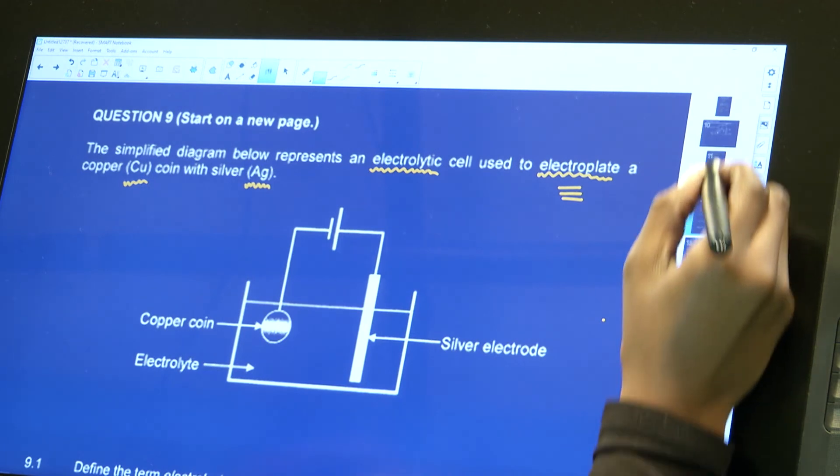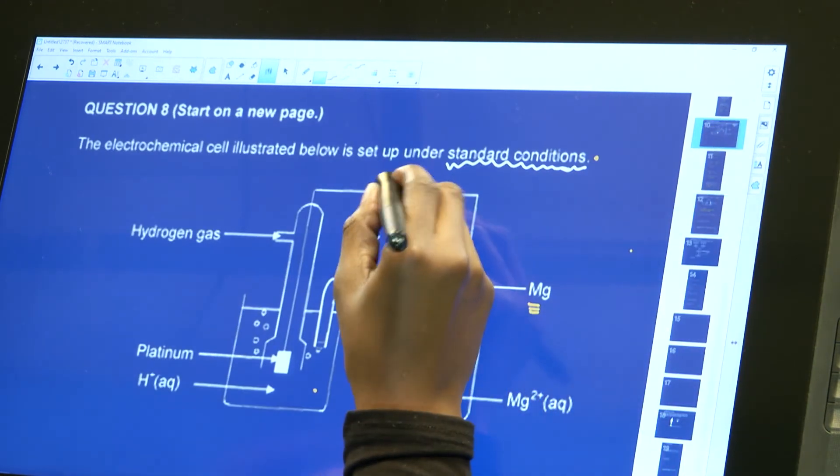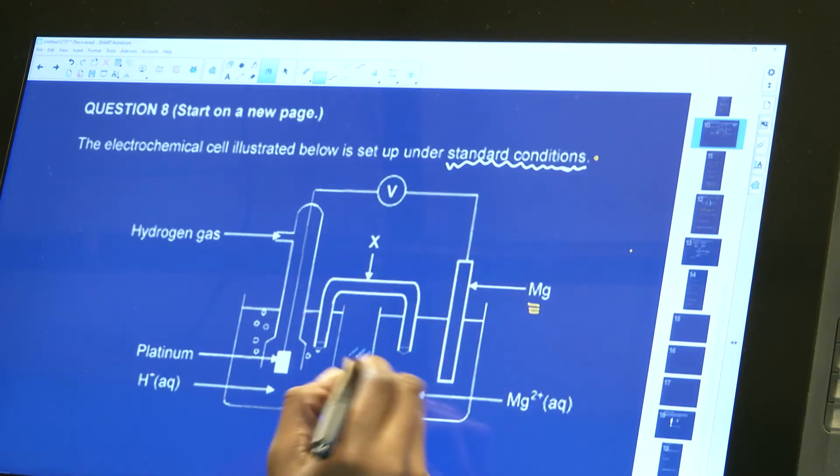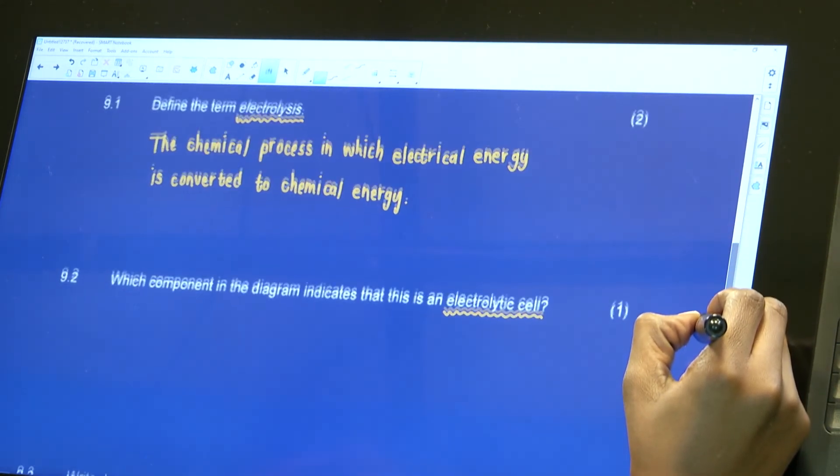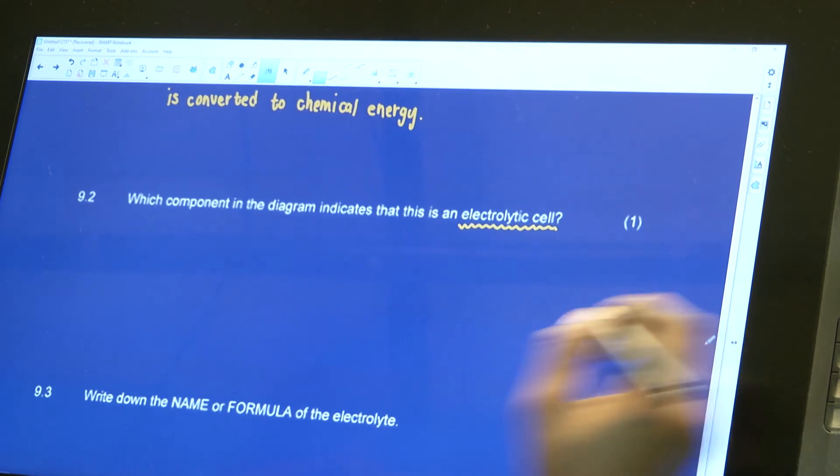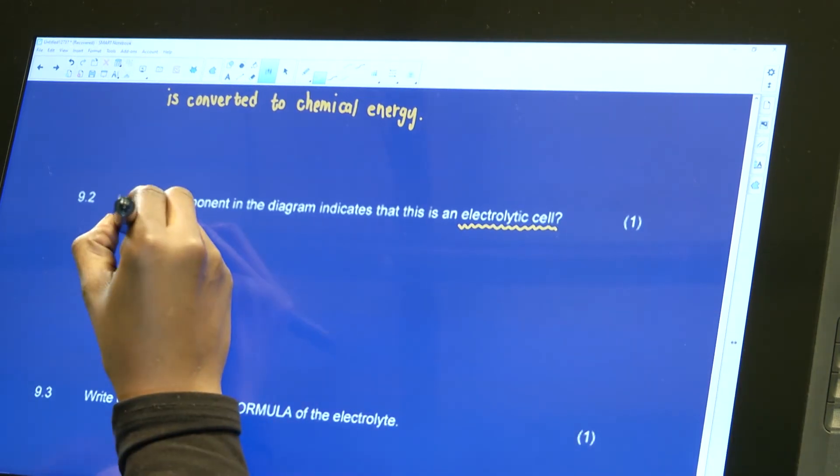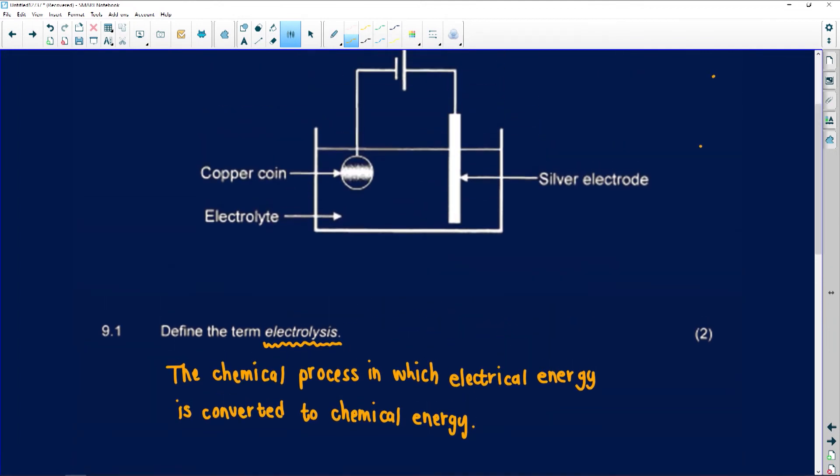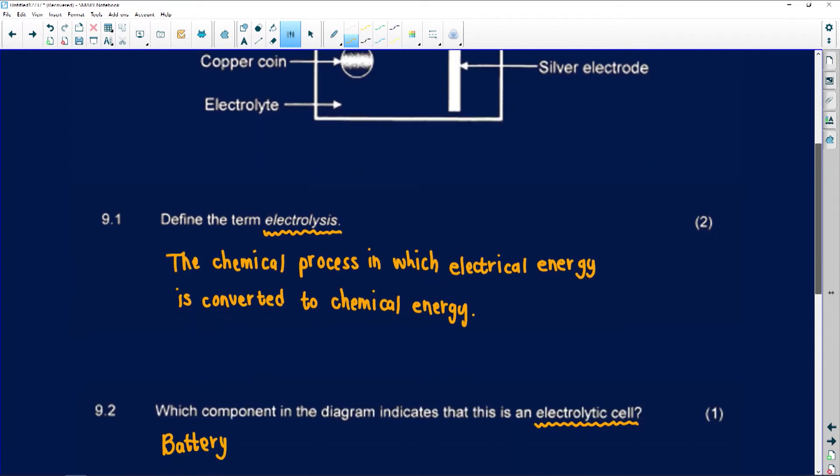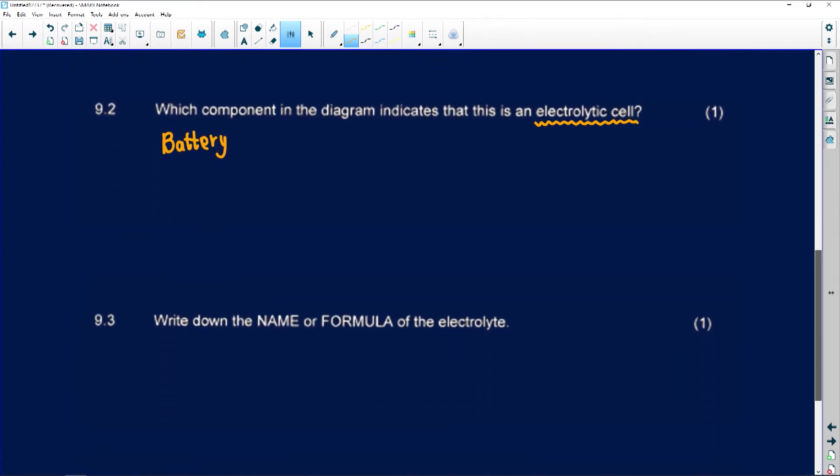We only had a voltmeter, we had two beakers and two different solutions. So one of the things that shows us which component indicates this is an electrolytic cell is the battery. It is the battery, because without the battery, for this process to take place, we need the electrical energy from the cell to make the process go on. So we need the battery, and I can see that was only for one mark.